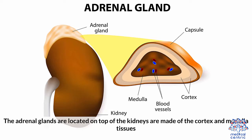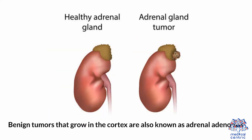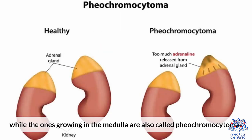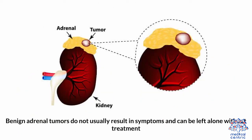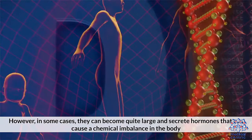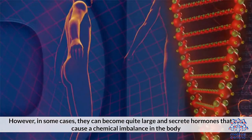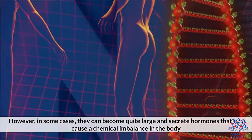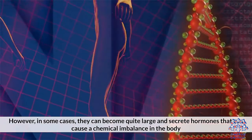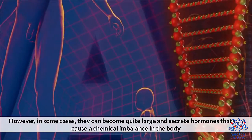The adrenal glands are located on top of the kidneys and are made of the cortex and medulla tissues. Benign tumors that grow in the cortex are also known as adrenal adenomas, while the ones growing in the medulla are called pheochromocytomas. Benign adrenal tumors do not usually result in symptoms and can be left alone without treatment.